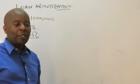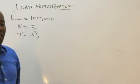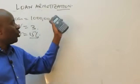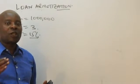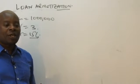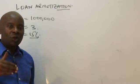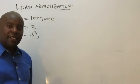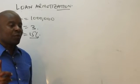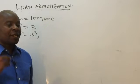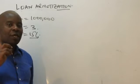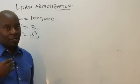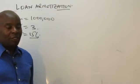Hello, welcome to this session. I'll be looking at loan amortization. To amortize a loan basically means that you are reducing your loan obligation gradually, but in equal installments. The equal installments you are making could either be yearly, monthly, or depending on whatever agreement you have with a bank.